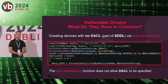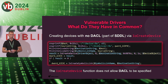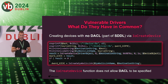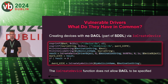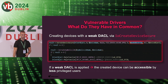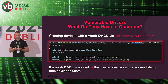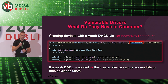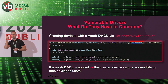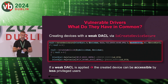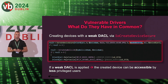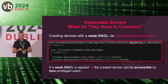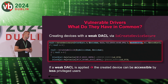The first scenario is when you create a device with no Discretionary Access Control List — the direct usage of the IoCreateDevice kernel function. Unfortunately, IoCreateDevice does not allow a DACL to be specified, so your device will get the default DACL which is open for even non-privileged users. The second scenario is creating a device with a weak DACL using IoCreateDeviceSecure — despite being considered the more secure option, if it is used with a weak DACL, the device driver becomes accessible for less privileged users.